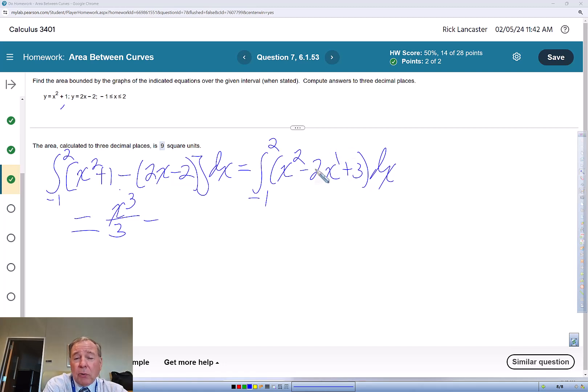We're going to anti-derive this to x cubed over 3. This is a 1, so this will be x squared over 2, but times 2, so just minus x squared, and then plus 3x from negative 1 to 2.